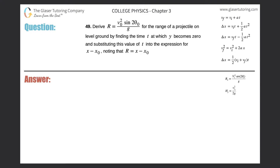Number 49: derive the formula for the range of a projectile on level ground by finding the time at which y becomes zero and substituting this value for t into the expression for x, noting that the range is the same thing. Let's draw a quick coordinate system here.